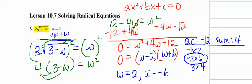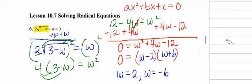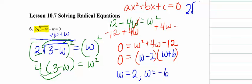Now it's important to check all of our results. So let's go ahead and check the first answer that I got, which was 2, in that original problem. So we have 2 square root of 3 minus 2, minus 2 again equals 0. So all the W's become 2's. 3 minus 2 is 1.